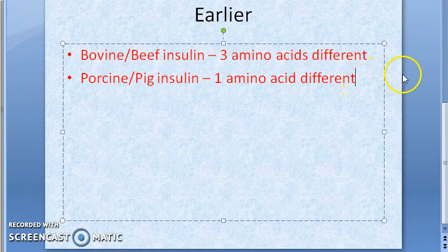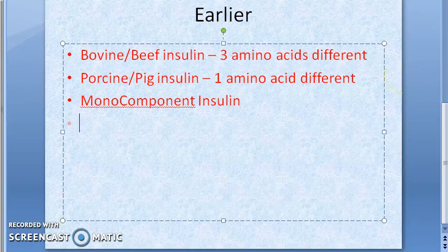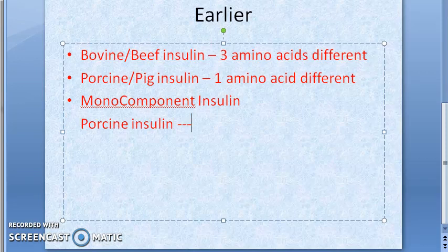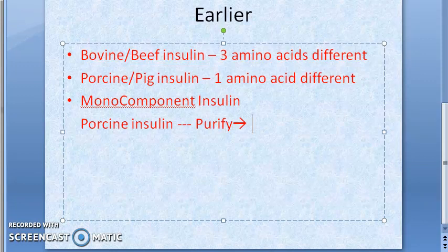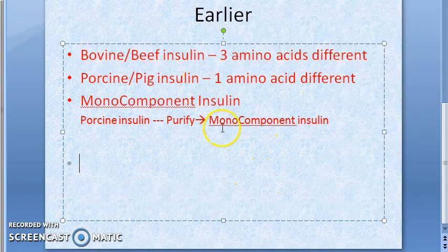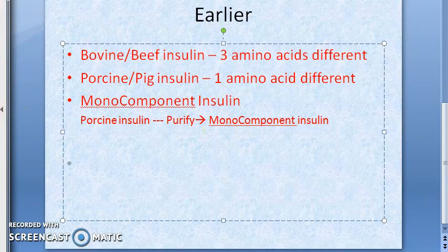Moving on to monocomponent insulin — this is nothing but purified porcine insulin. You take porcine insulin and purify it, and you get monocomponent insulin. These purified porcine insulins cause less insulin resistance. However, these are also not very important clinically.